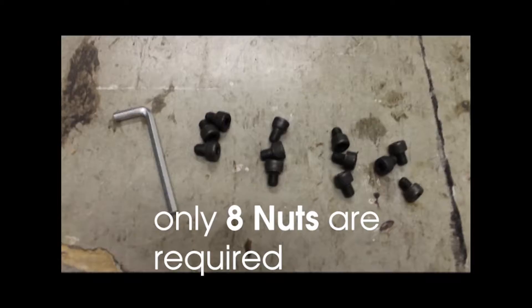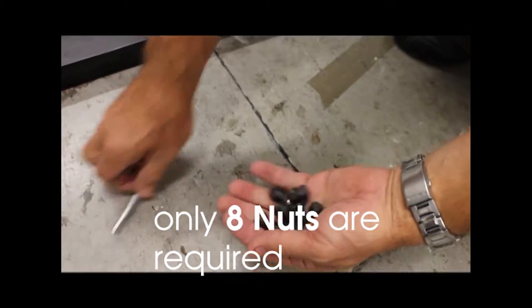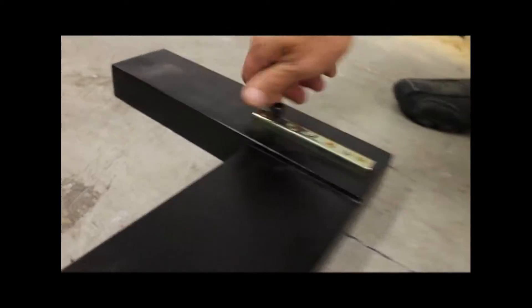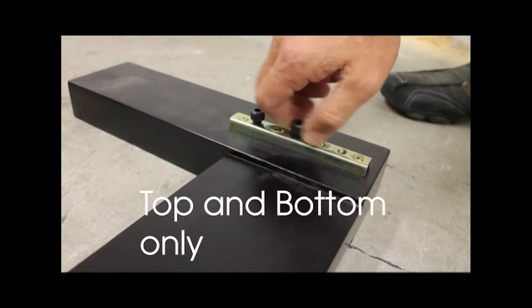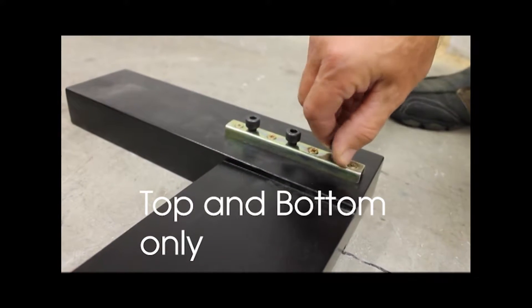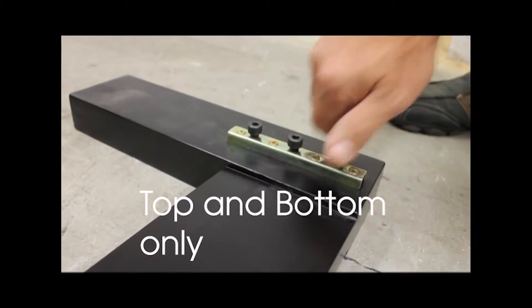You should have 12 little nuts plus one allen key. Just screw those nuts onto each end, not all the way through. You want to leave a slight gap so you can slip or clip the side rail into place.